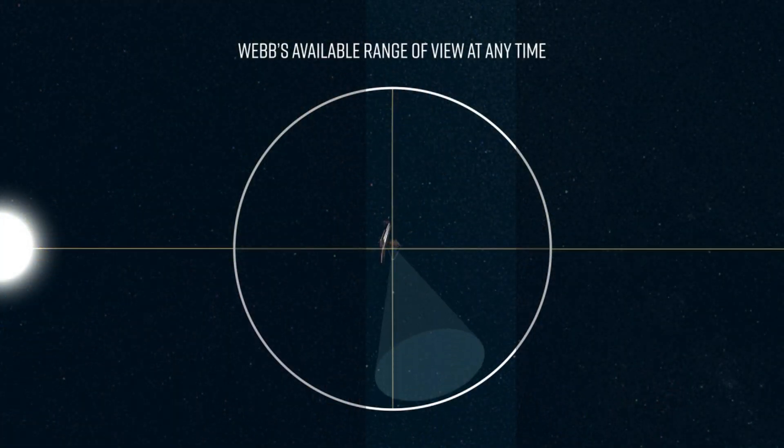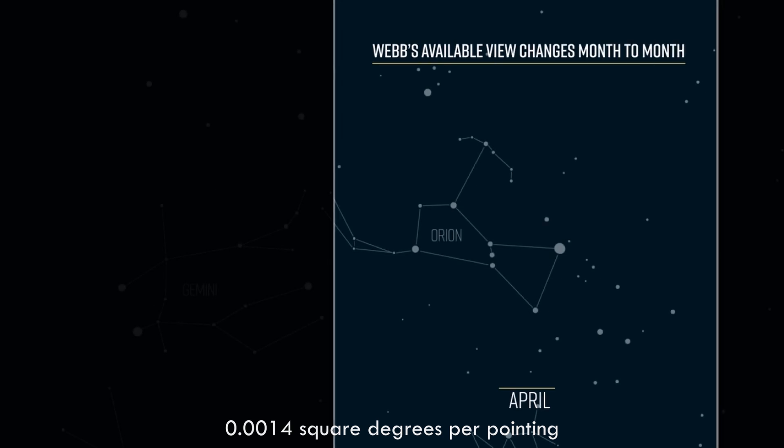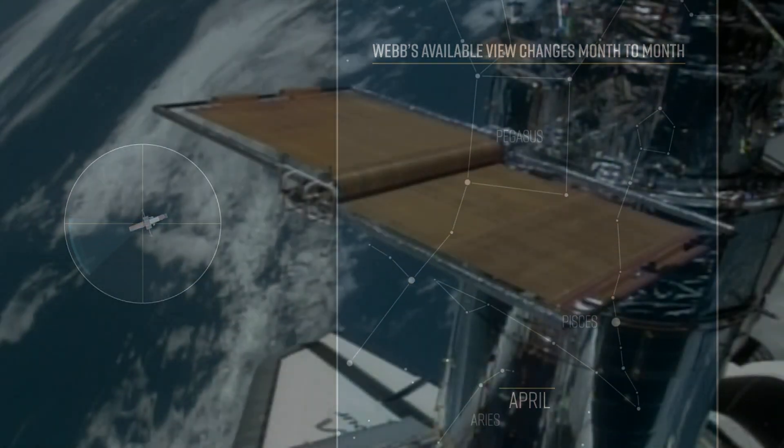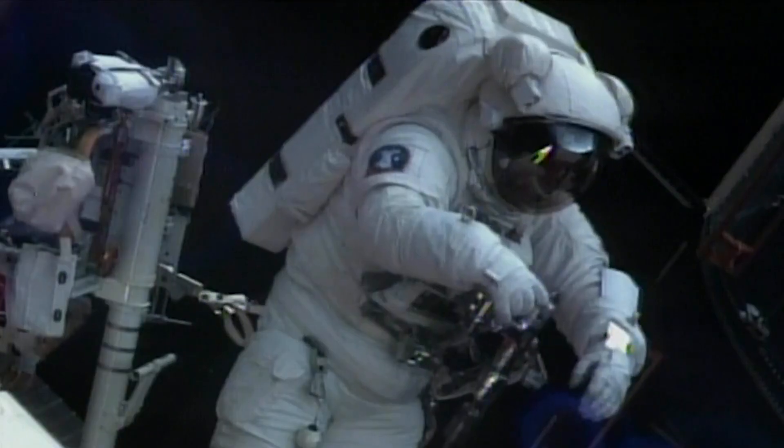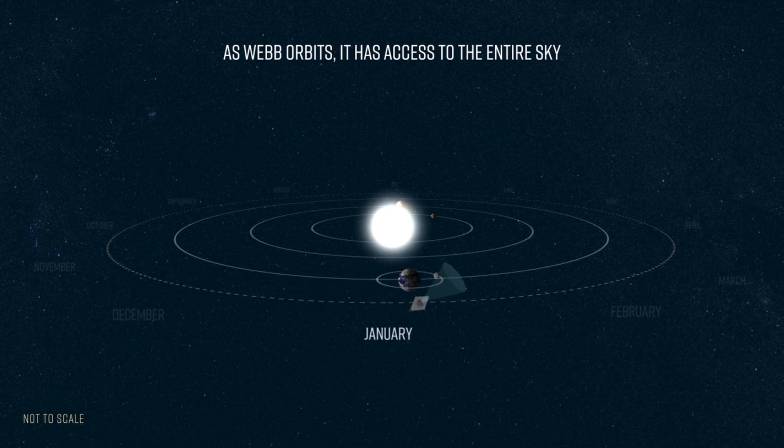But Webb's field of view is tiny, about 0.014 square degrees per pointing, so it cannot conduct all-sky surveys. And once launched, it cannot be physically upgraded or repaired, unlike Hubble. And its operational life is capped by finite fuel reserves, currently projected to last at least a decade.